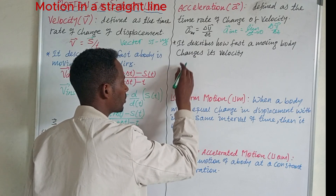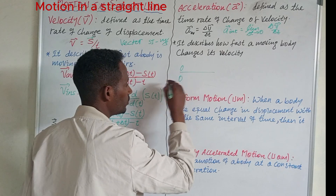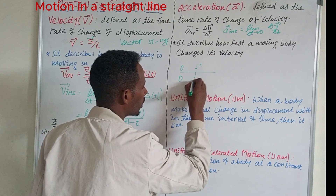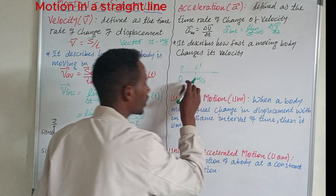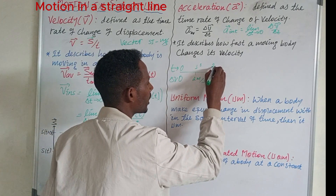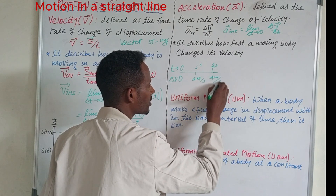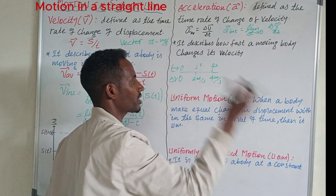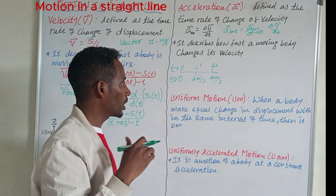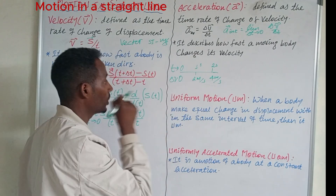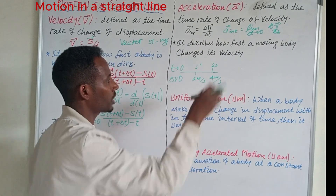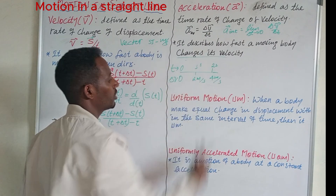How fast the body is changing its velocity is the time rate of change of velocity. At zero time, for example, an object is changing velocity. In one second, speed is 30 meters per second. You are changing velocity over changing time. Velocity moves via an object moving via constant acceleration. Acceleration is the rate of change of velocity — it describes how fast the body is changing its velocity.